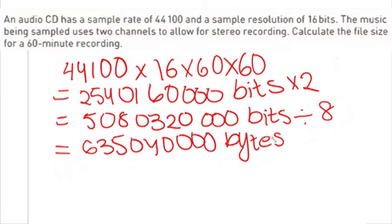Now, in order to convert this to megabytes, we are going to divide this by 2 to the power of 20, which would give us an approximated value of 605 megabytes.